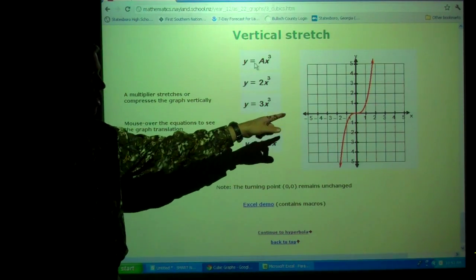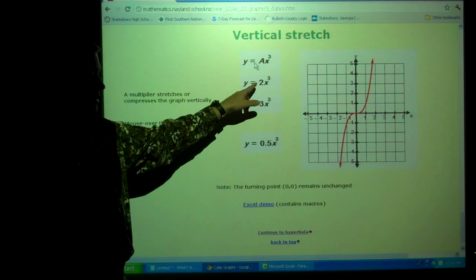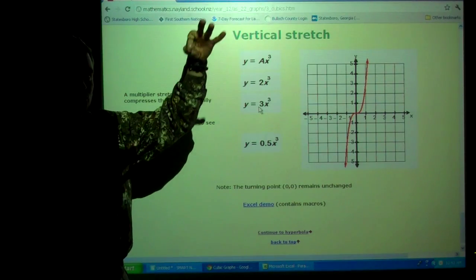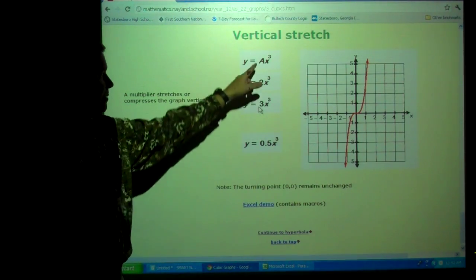If A is greater than 1, we say narrower. Watch the graph. Everybody's eyes up here. Watch what happens when A is greater than 1. It just narrows up some. See how narrow it's getting? It's stretching. We say that's a vertical stretch.